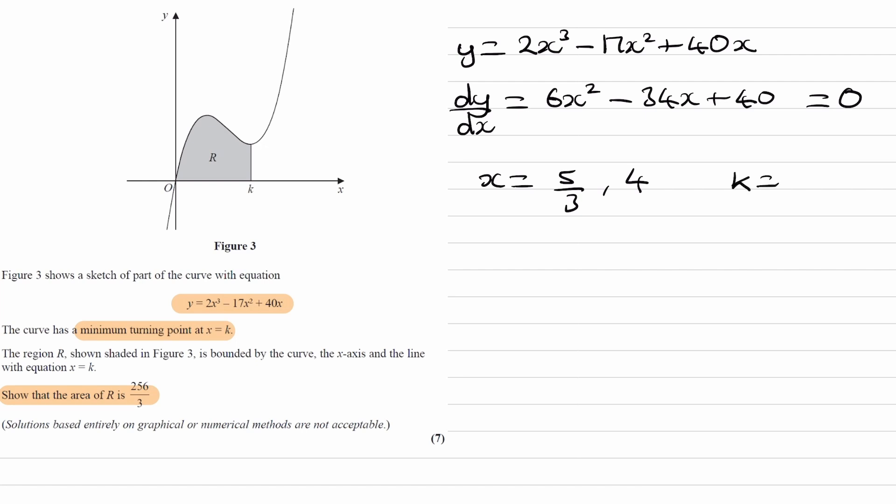So then, k is equal to 4. So we can then integrate our cubic, 2x cubed minus 17x squared plus 40x, integrate it between 0 and 4.